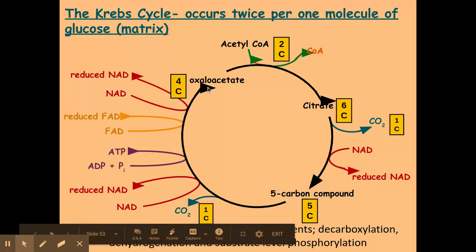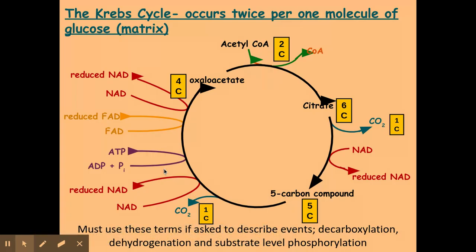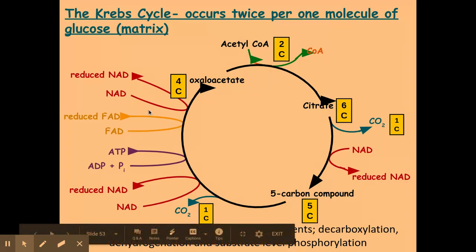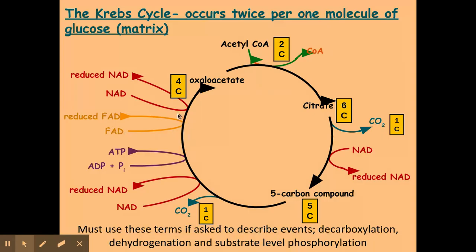My five carbon compound then turns into oxaloacetate through various processes. Carbon dioxide is removed — so my five carbon compound has been decarboxylated. A hydrogen is removed and added onto NAD to form reduced NAD — so dehydrogenation has occurred. ATP is being formed through substrate level phosphorylation, which is where ATP is made without the use of a membrane. Further dehydrogenation also occurs, as another coenzyme called FAD is reduced by taking a hydrogen and electron from the five carbon compound to produce reduced FAD.